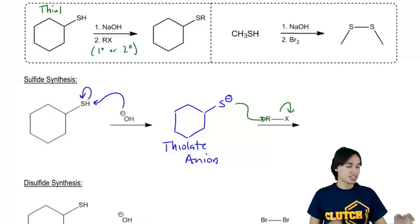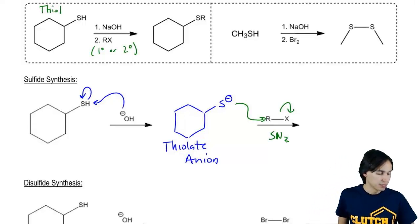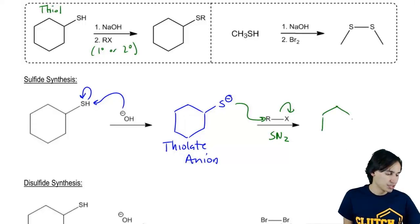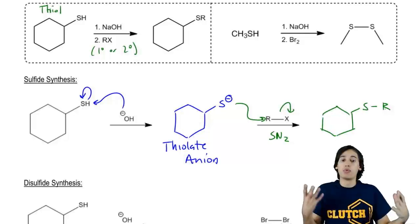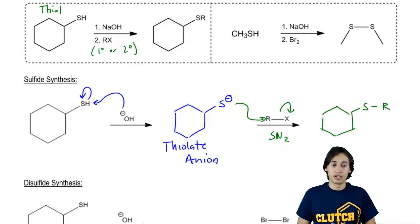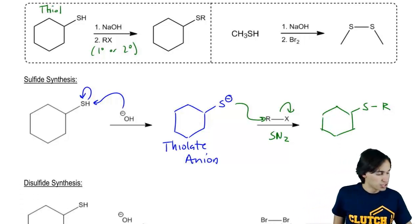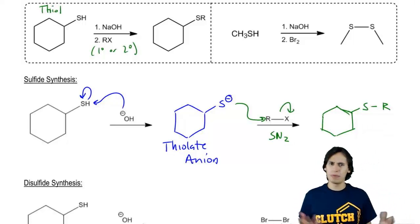So now I've got my backside attack, my SN2 reaction, and what I'm going to get as my product is simply a sulfur with now whatever that R group was. Now whatever that R group – it could be whatever I wanted. I just pick the alkyl halide of choice. Cool? Cool? So that's how we make a sulfide out of a thiol. Not bad at all, right?